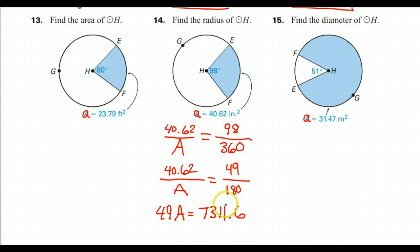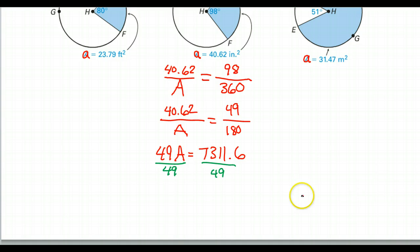And I get 7,311.6. All right, good. So far I didn't have to do any rounding yet. Now I'm going to divide by 49 on both sides. So dividing by 49. How much space do I have down here? A little bit more.